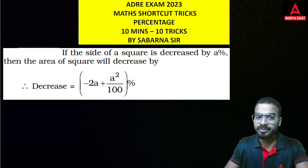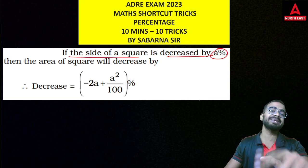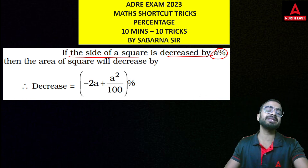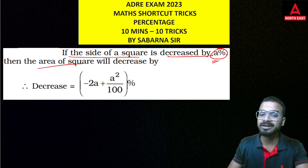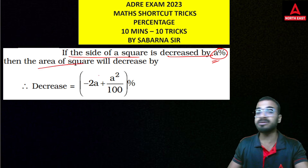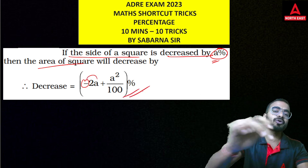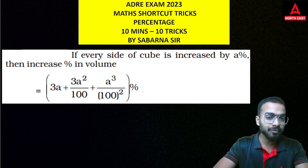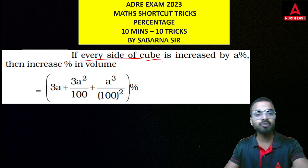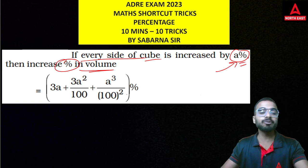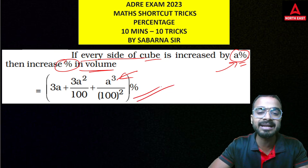Next, if the side of a square is decreased by A percent, since A is less than A percent, this becomes minus A. So we have minus 2A minus A squared by 100, and we will get the final answer. Next, I have one last shortcut: if every side of a cube is changed by a percent, we will get the final answer.